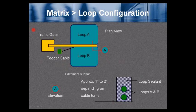Matrix loop configuration: this application looks like a traffic gate. We have Loop A and Loop B sharing the same feeder cable. A close-up of the cutout in the ground shows Loop A and Loop B sharing the same hole, approximately 1 to 2 inches deep depending on the number of cable turns.